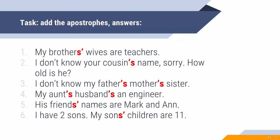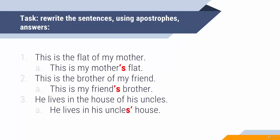'I have two sons. My son's/sons' children are eleven.' In this sentence you can put the apostrophe before S as well as after S. It's not quite clear from the context, so it's important for you to understand what you mean and to know when you write about yourself, for example, which one you choose.